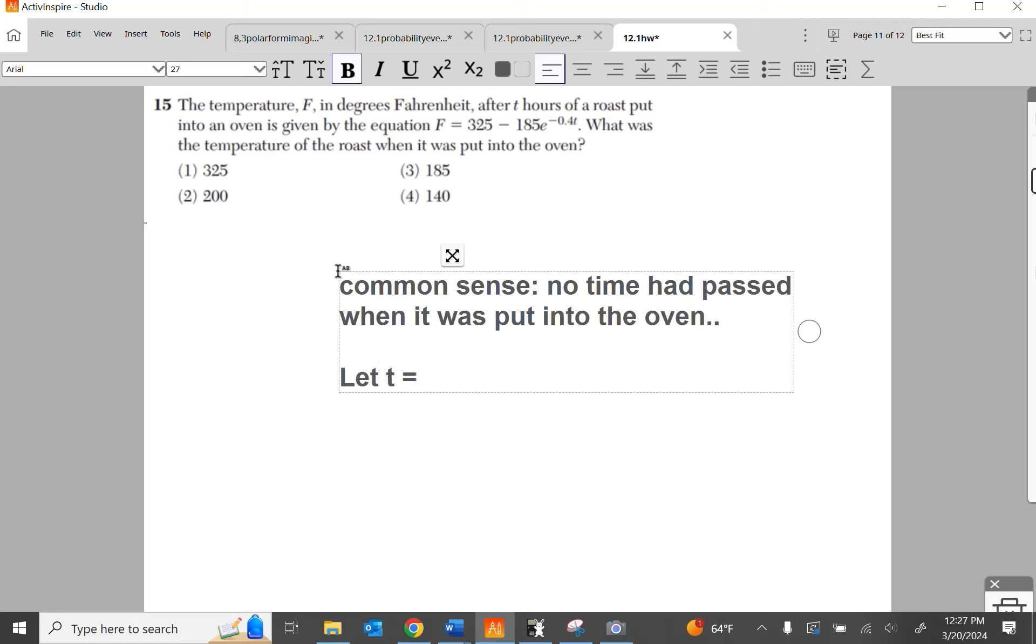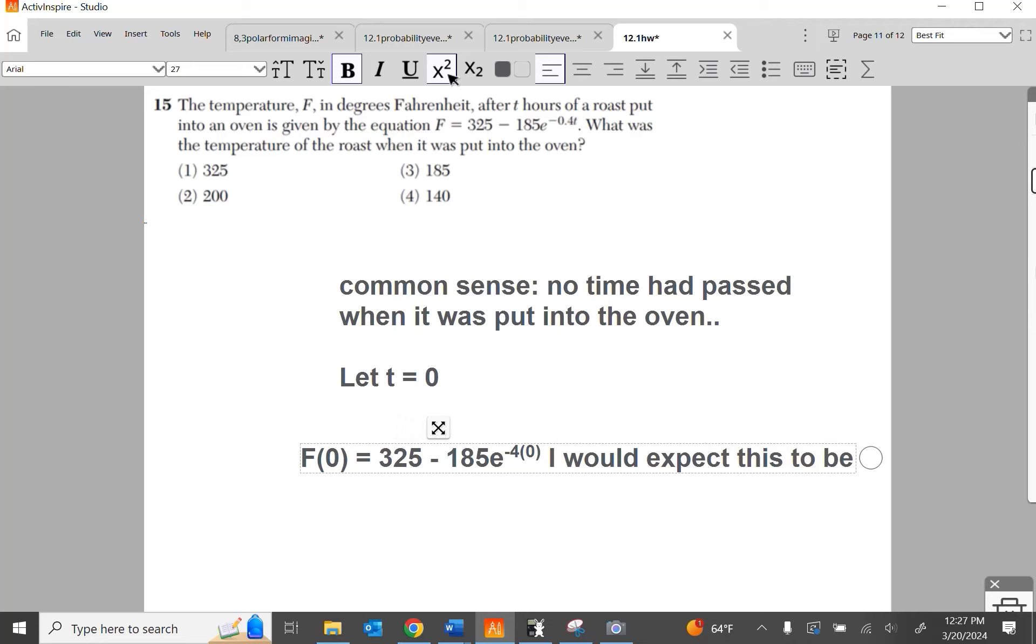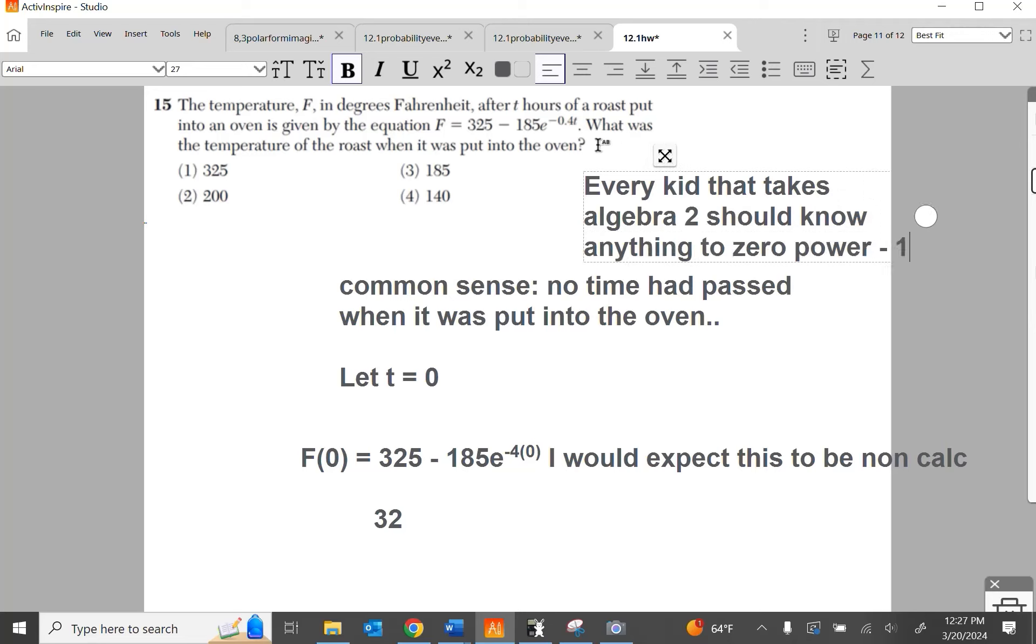No time had passed when it was put into the oven. So let T equals zero. So what I'm thinking here is the temperature at zero time, F of zero, is 325 minus 185E raised to the negative 4 times the zero. So, you know, I would expect this to be non-calc because every kid who takes algebra 2, and I mean this, and it's not going to be anybody who watches this, but every kid that takes algebra 2 should know that anything to the zero power is equal to 1.